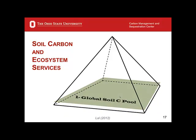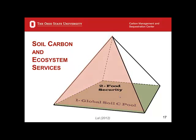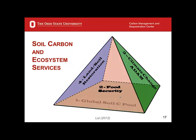Think about soil organic carbon as the base of a pyramid on which depend several ecosystem services such as food security, climate change adaptation and mitigation, land and soil restoration of many drastically disturbed soils, and biodiversity. The base of the pyramid is soil quality based on soil organic carbon content. The strength and stability of this pyramid — and all those tremendous ecosystem services of significance to the global population — depends on how the four sides of the pyramid on top are tied together, and they are tied together by political vision and leadership, which is very critical.